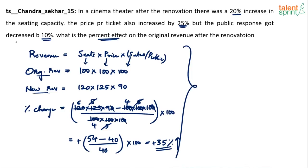This is the regular calculation, but revenue is really just price into number of sales. The number of seats are not going to impact the revenue — only the number of sales will. So I think we should exclude the seats. The percentage increase in seats would help revenue only if more people came in, but here the public response has dropped by 10%.